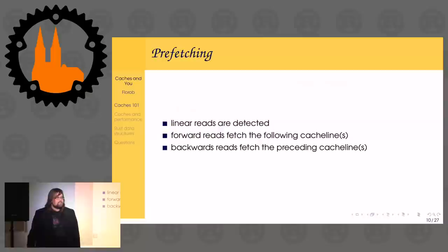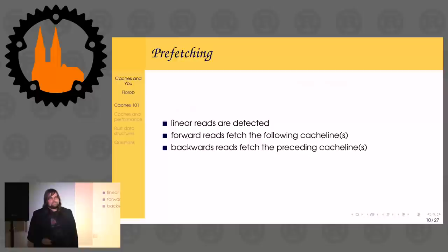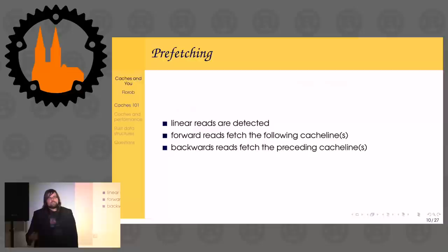Quick last thing in the 101 section: prefetching. If you're reading linearly through data, either forwards or backwards, data is not fetched only when you actually access it — the processor also recognizes that someone is iterating forward through data and already fetches things you'll probably access in the future. So while you're still doing calculations, the processor will already have gotten the next data into cache so you can access it — which is a useful property.